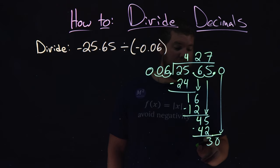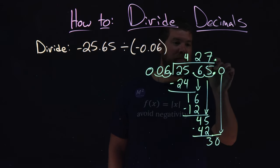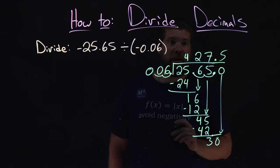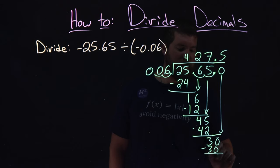6 goes into 30, 5 times. The decimal stays here. Put a 5 there. 5 times 6 is 30, and they cancel. We get 0.